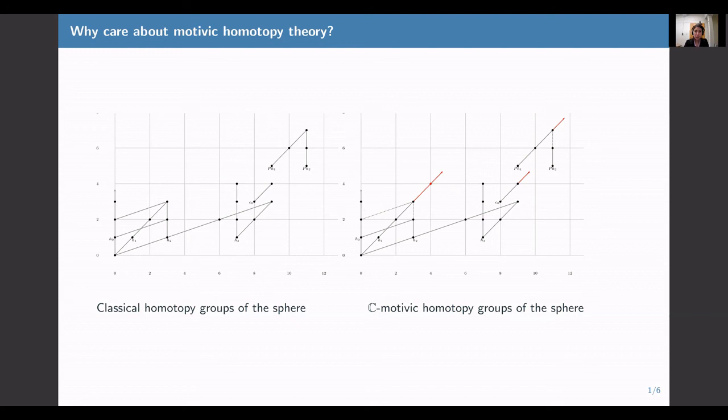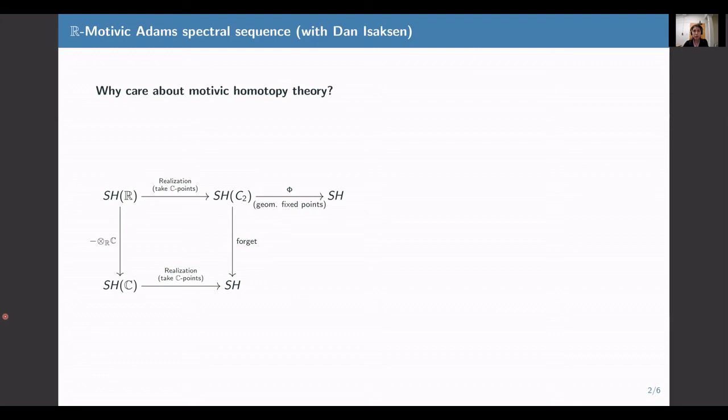For example, the red arrows are indicating that the motivic version of the element eta is non-nilpotent, whereas it is nilpotent on the classical side. These differences are interesting in their own right, but they're also useful for studying classical homotopy theory, even if you didn't care about motivic homotopy theory, because there's a structured way to compare these contexts.